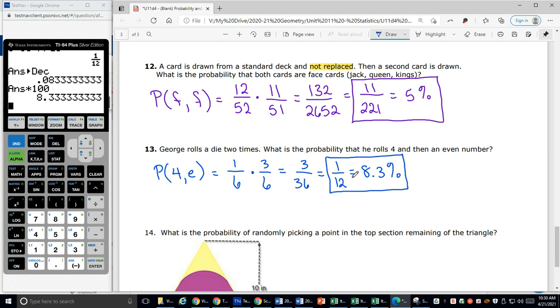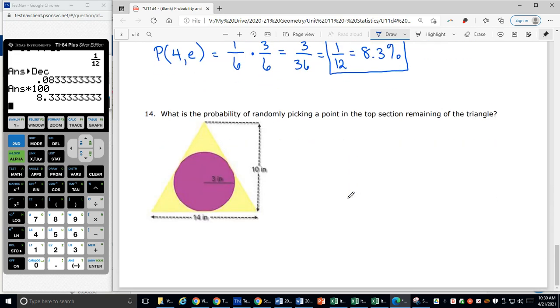All right, one last problem. What is the probability of randomly picking a point in the top section remaining of the triangle? So this is kind of an interesting one to look at. I'm looking at the probability of just landing in this section, which has this little arc here, of just this section up here. So that means it's going to be the top piece out of the whole triangle.